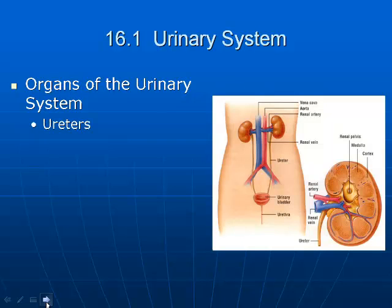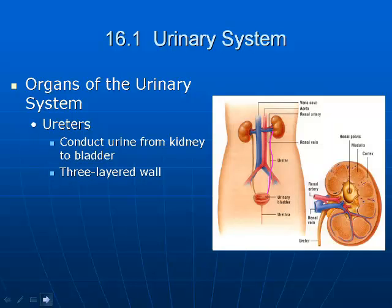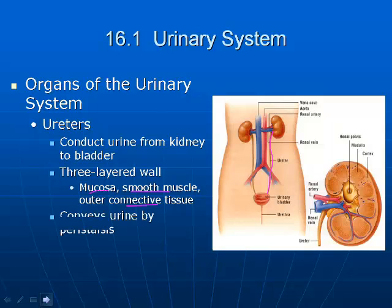Next are the ureters. These tubes take urine from the kidneys to the bladder. They have a three-layered wall consisting of mucus, smooth muscle, and connective tissue. Urine doesn't travel by gravity alone — it's moved by peristalsis, the rhythmic contraction of the muscle walls.